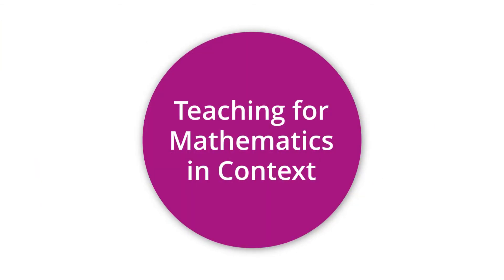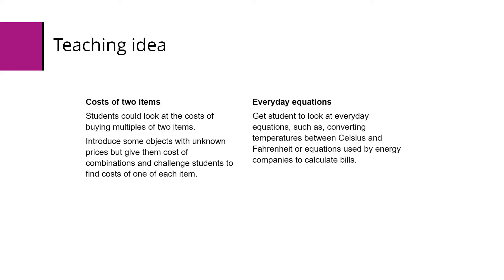So here are some ideas for how we can teach this topic. Students can look at the costs of buying multiples of two items. You can introduce some objects with unknown prices but given the cost of combinations of those objects, and challenge students to work out what one of each item costs. You can also look at some everyday equations such as converting temperatures or energy bills.